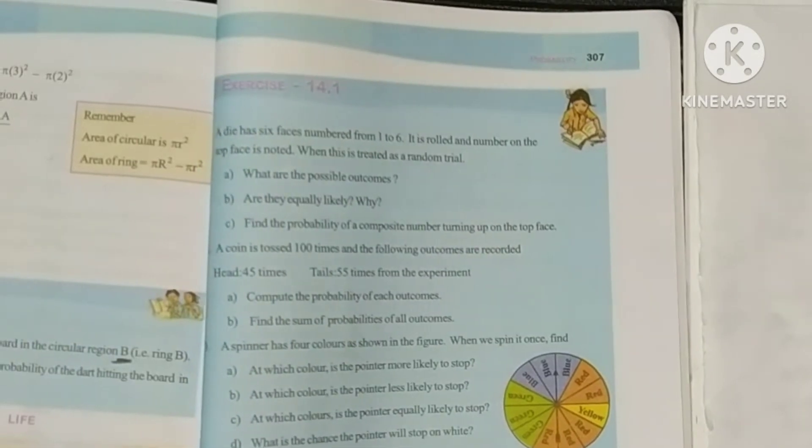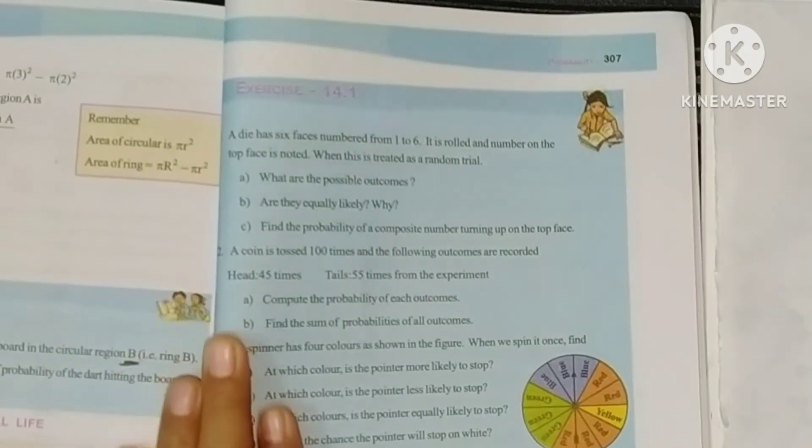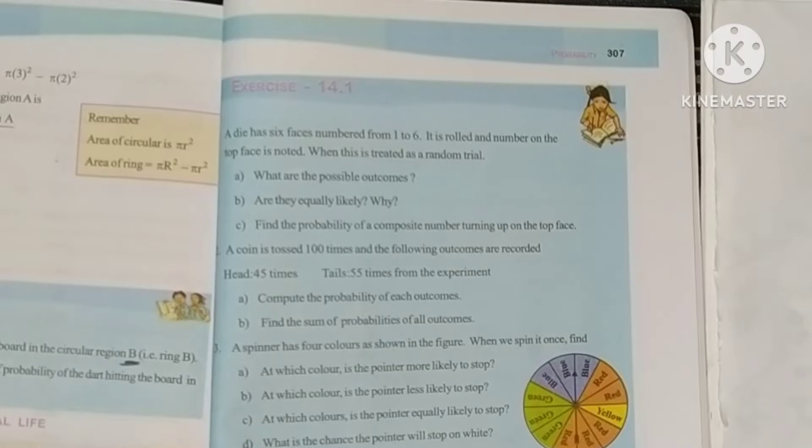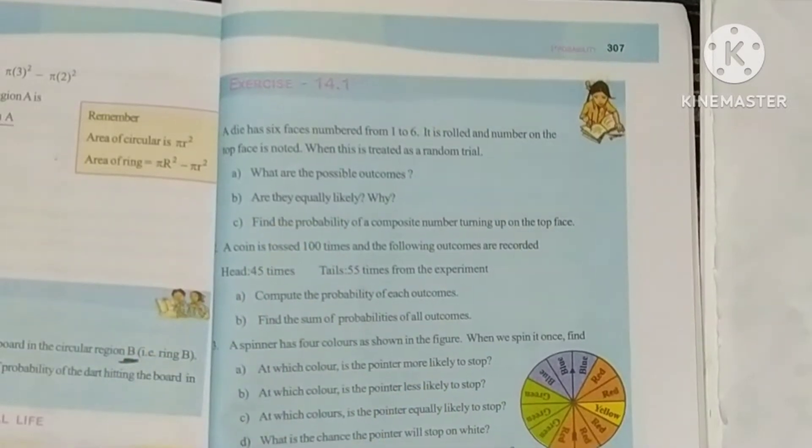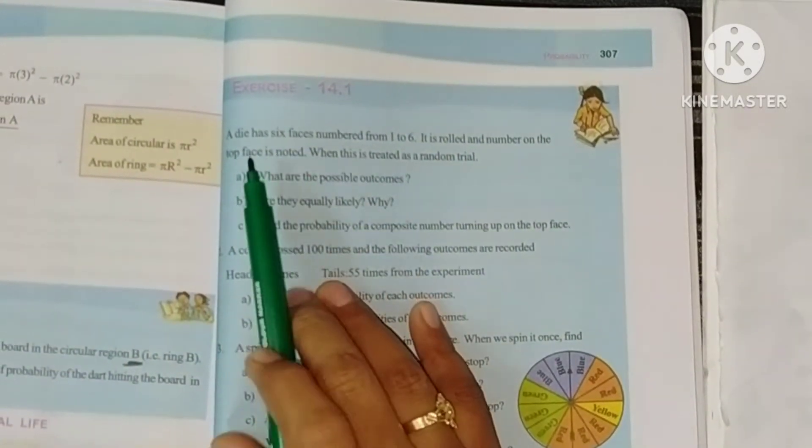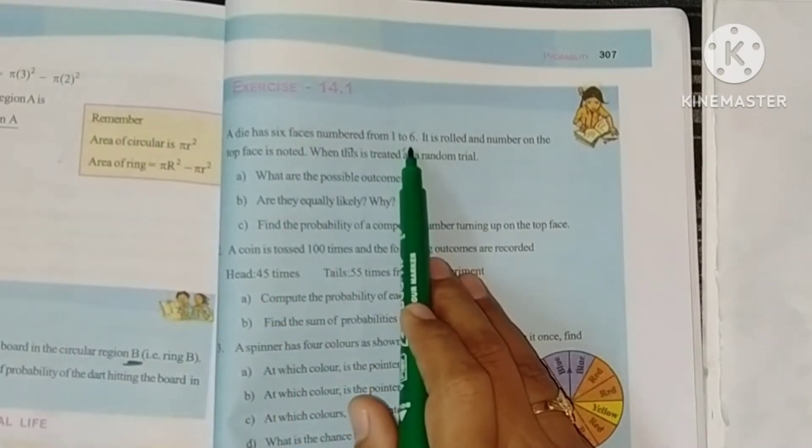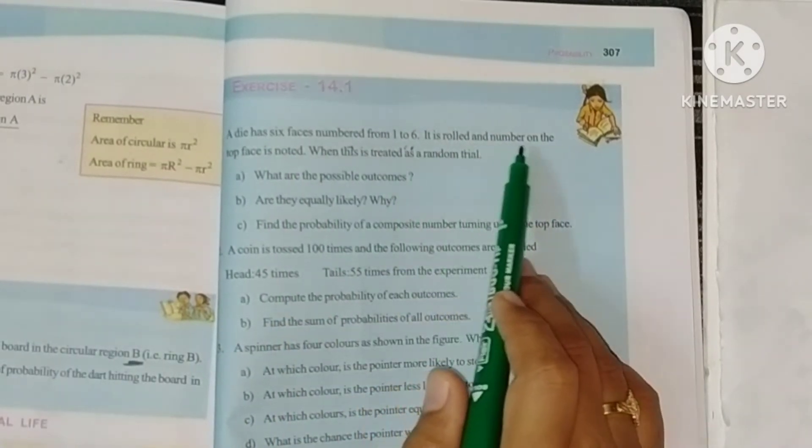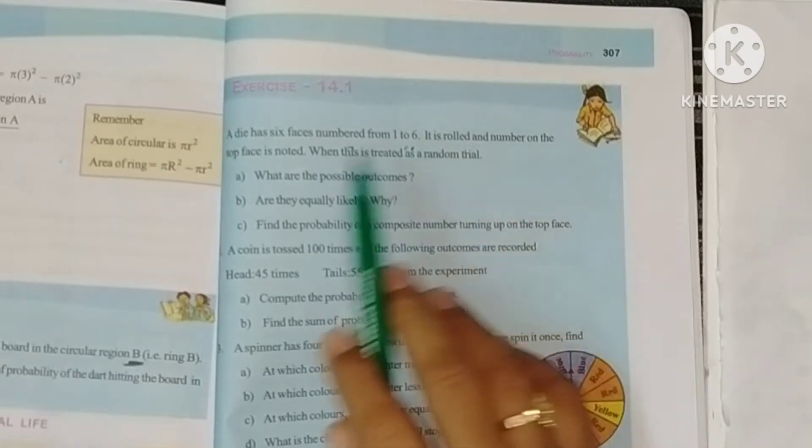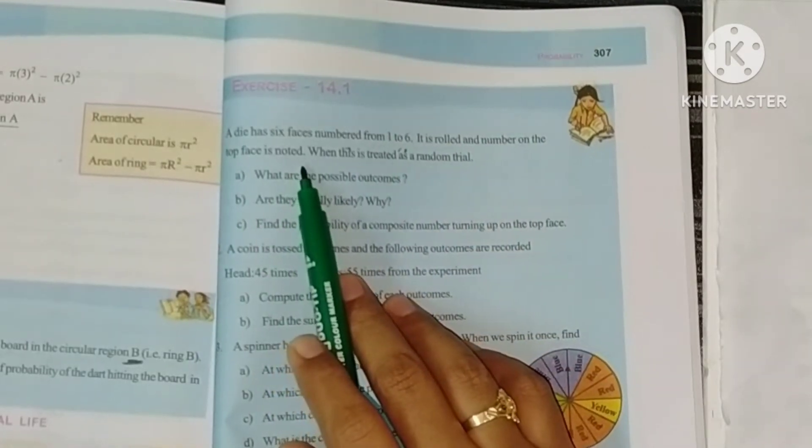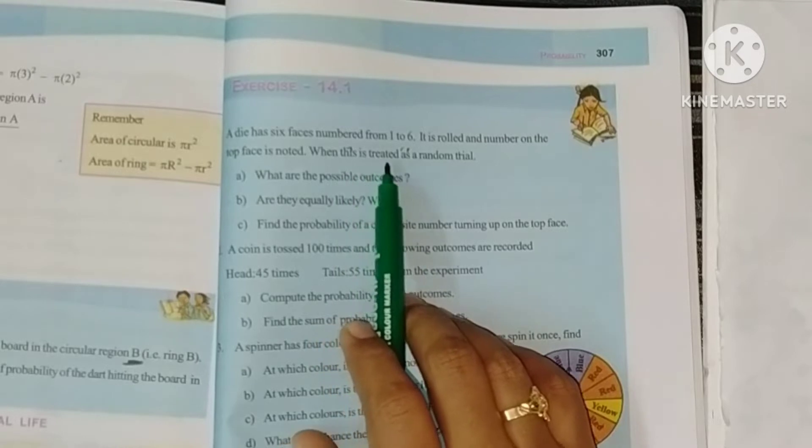Hello students, welcome to my channel. Today in this video we are going to see the first four problems of Exercise 14.1. See the first one: A die has six faces numbered from 1 to 6. It is rolled and the number on the top face is noted. When this is treated as a random trial.